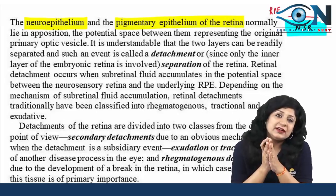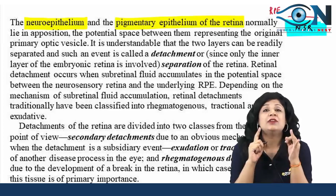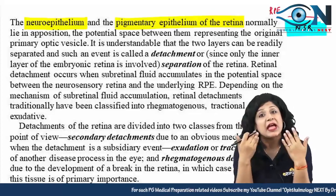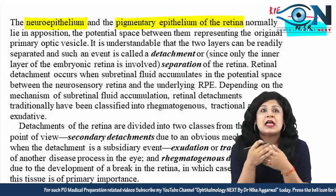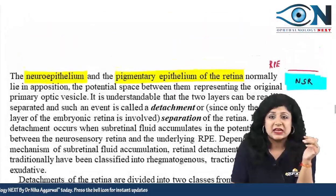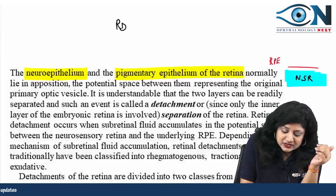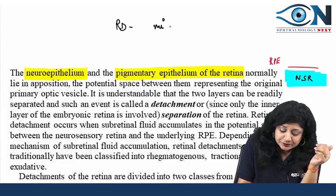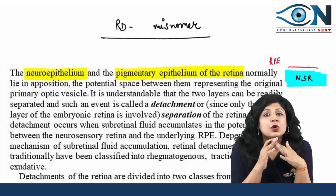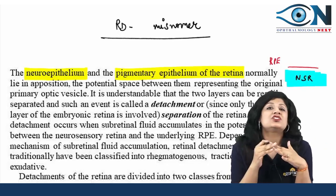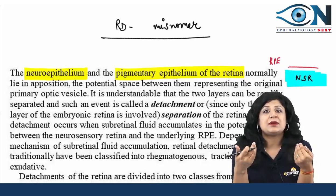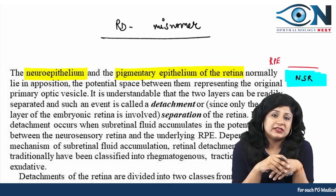What is important here: the outermost RPE layer, then the 9 layers of neurosensory retina, and the subretinal space with subretinal fluid between them. RD is actually a misnomer — it is not a detachment but a separation. Whenever you have increased separation between these two layers, that is your retinal detachment.